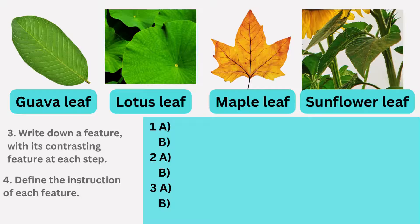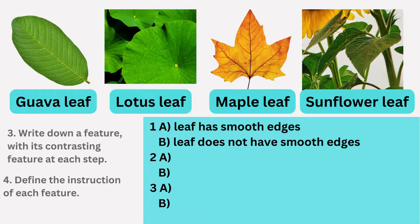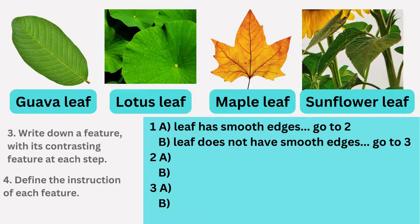Let's begin with the smoothness of the leaf edges. In 1a, we write that the leaf has smooth edges, and in 1b, we write the opposite — that the leaf does not have smooth edges. Since multiple leaves exhibit smooth edges and multiple leaves do not, we instruct to proceed to a further step for both choices.